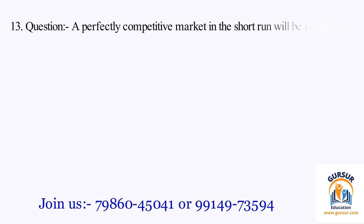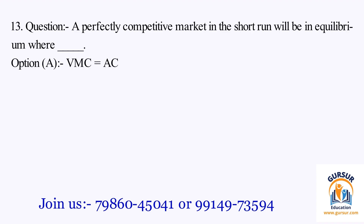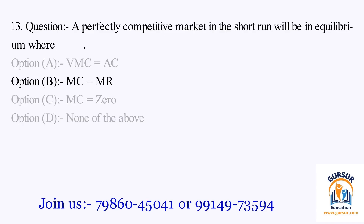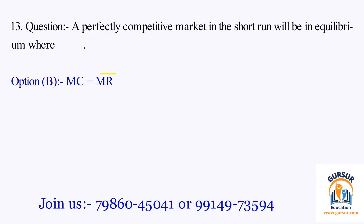Question number 13. A perfectly competitive market in the short run will be in equilibrium where: The option A is VC equals AC. The option B is MC equals MR. The option C is MC equals 0. The option D is None of the above. The right answer is Option B, that is MC equals MR.